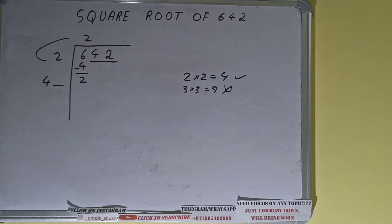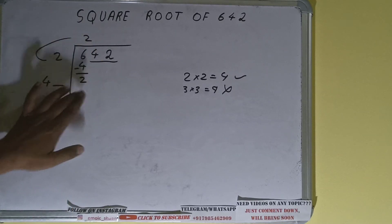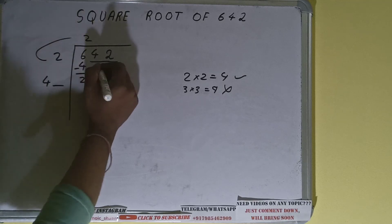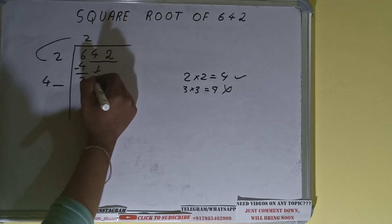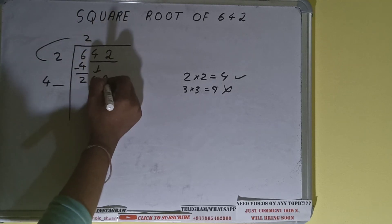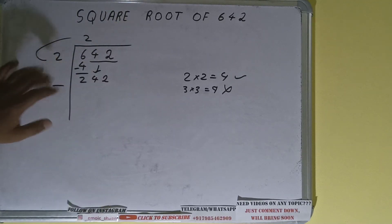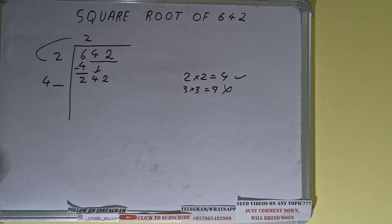We did 2 into 2, so 2 plus 2 gives 4. Keep one digit extra — this number we need to make bigger so we can divide. Bring the next pair down and it will become 242.